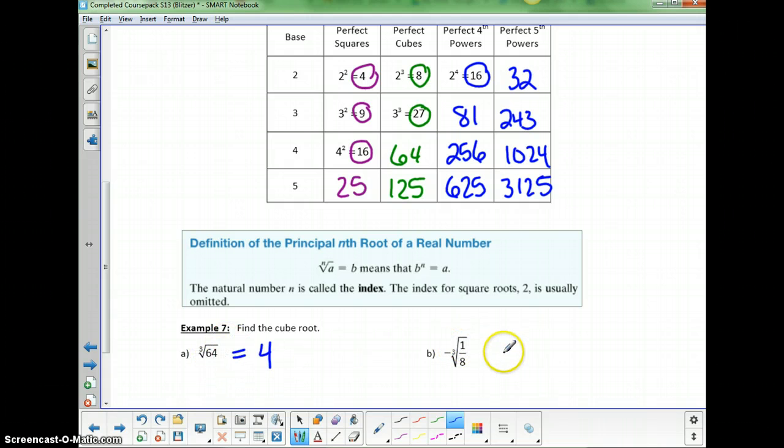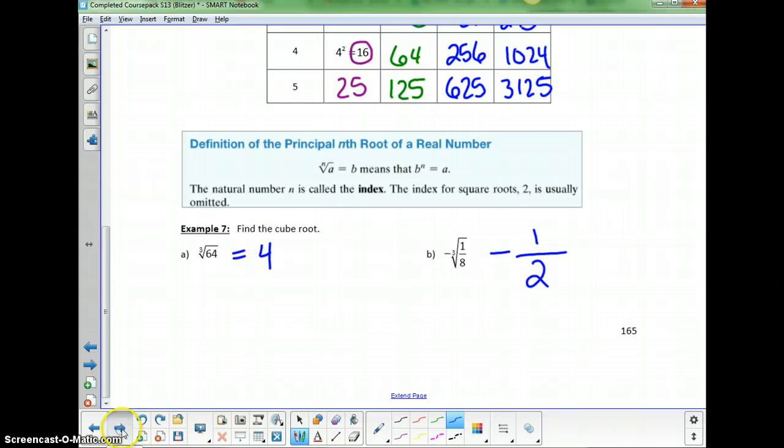Now for the negative cube root of 1 eighth, it's going to be negative. We didn't put 1 in this list at all because 1 times 1 is 1, 1 times 1 times 1 is 1, and so on. The square root or cube root or whatever root of 1 is 1. The cube root of 8 is 2, so this will be negative 1 half. Let's go to the next page.